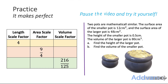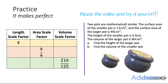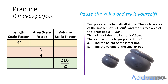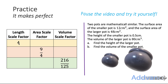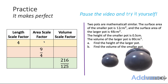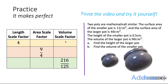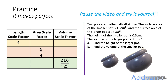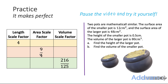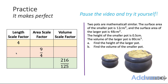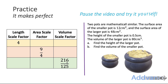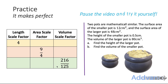Here are the practice questions. There is a table to fill in: if the length scale factor is 4, what are the area and volume scale factors? If the area scale factor is 9 over 4, you need to square root that to find the length scale factor, then cube it to find the volume scale factor. Similarly, cube root the volume scale factor to get the length scale factor, then square it to find the area scale factor.